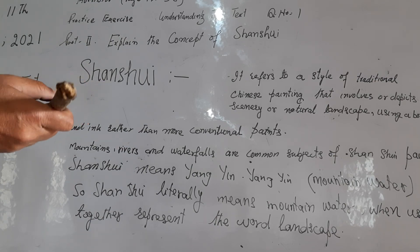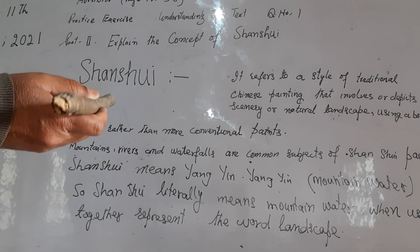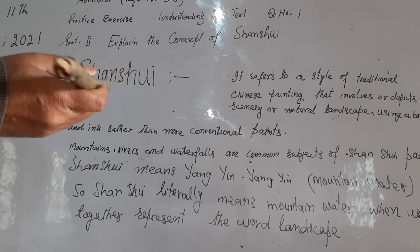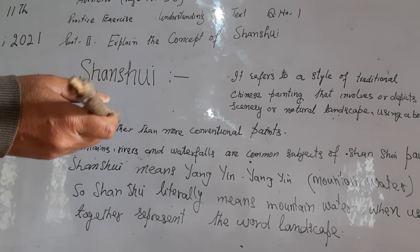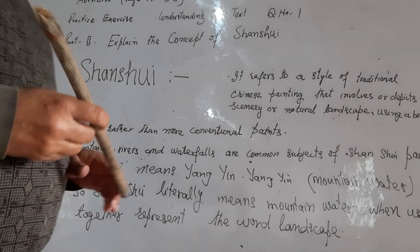So again, Shanshu literally means mountain and water. When used together, these values form the word landscape.